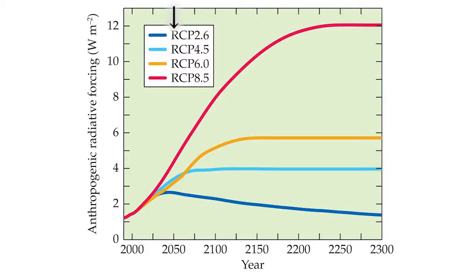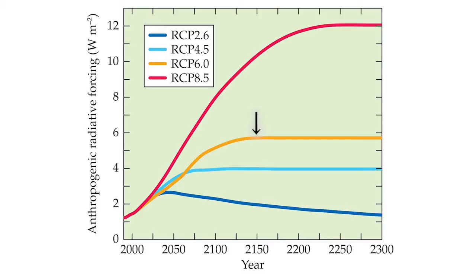The scenario RCP 2.6 requires that humans implement strong measures to mitigate greenhouse gas emissions, resulting in radiative forcing that peaks and declines during the century. RCP 4.5 and RCP 6.0 require measures that stabilize forcing by the end of the century and the middle of the next, respectively. RCP 8.5 requires relatively little mitigation of greenhouse gas emissions, so radiative forcing stabilizes only after 2250.